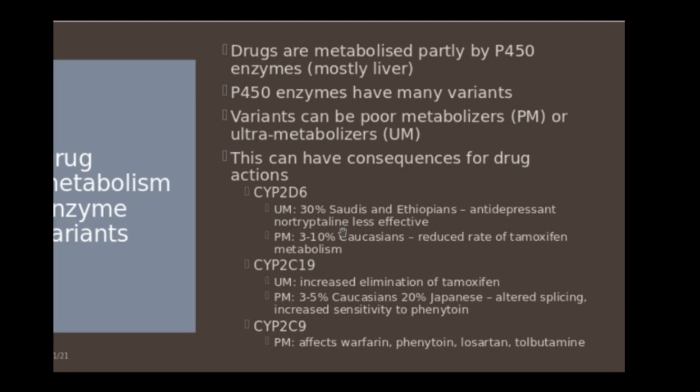Conversely, about 10% of Caucasians are poor metabolizers in CYP2D6, and that reduces the rate of tamoxifen metabolism. So effectively, you need to cut the dose down with them. Similar examples here with different CYP variants.